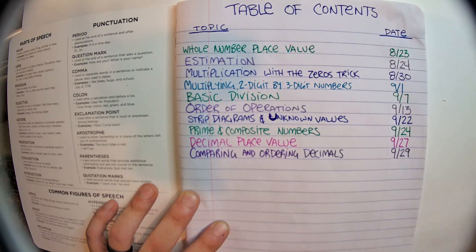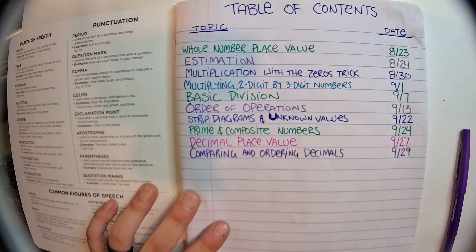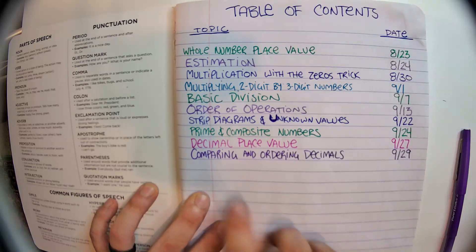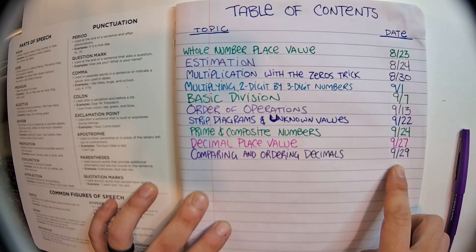So our notes for the day, 9/29, comparing and ordering decimals. Your table of contents should say comparing and ordering decimals, 9/29.